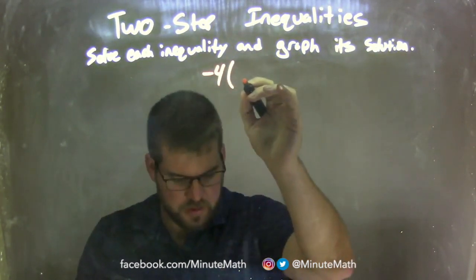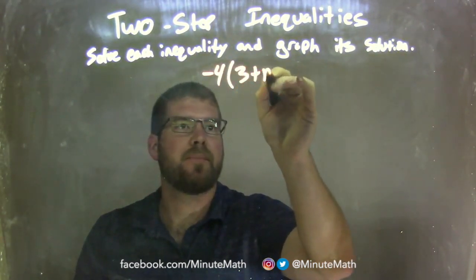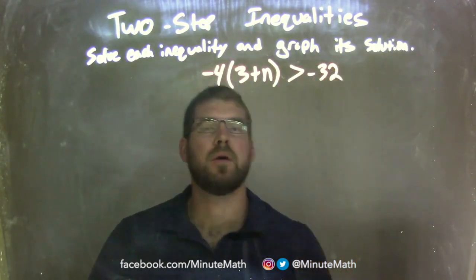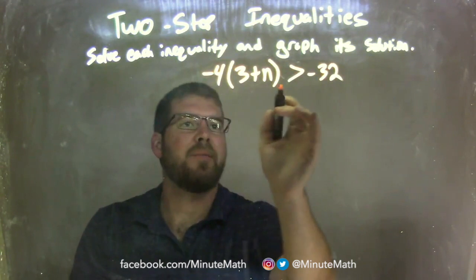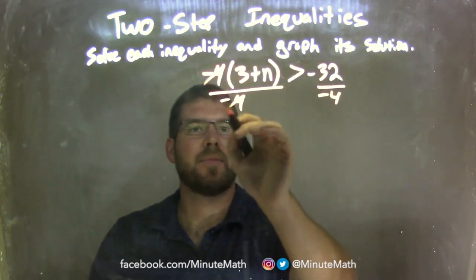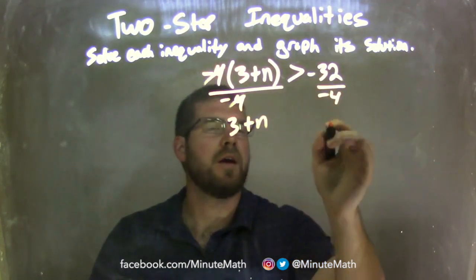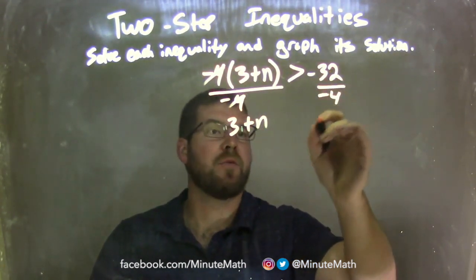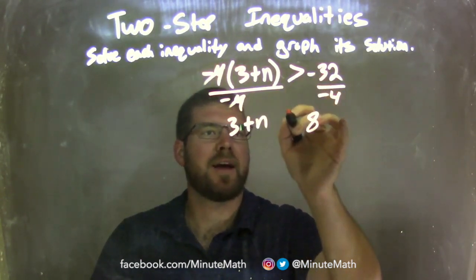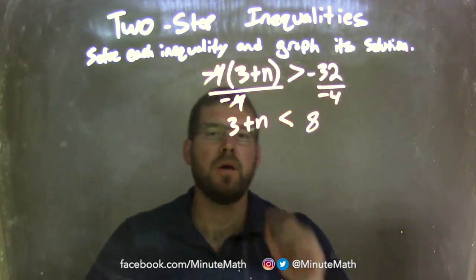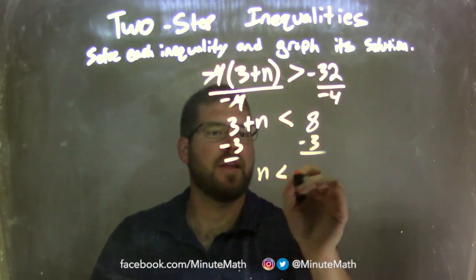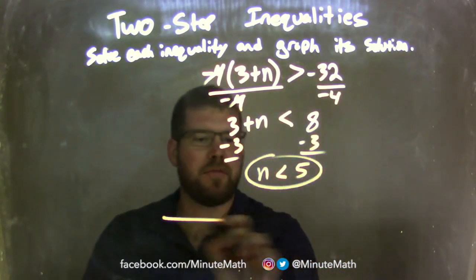Negative 4 times (3 plus N) is greater than negative 32. My first step: divide both sides by negative 4. That eliminates negative 4, giving me 3 plus N on the left, and negative 32 divided by negative 4 is positive 8. Since I divided by a negative over an inequality, that greater than sign turns into a less than sign. Now I subtract 3 from both sides, and we have N is less than 5.